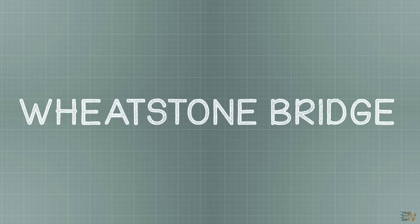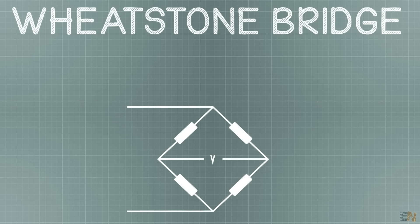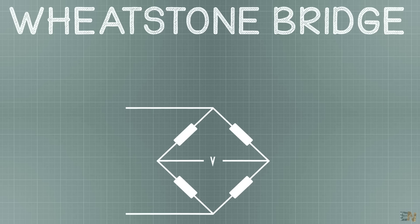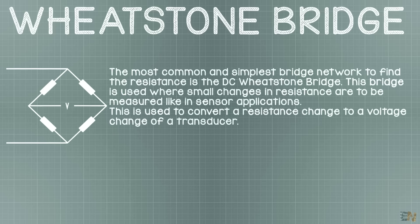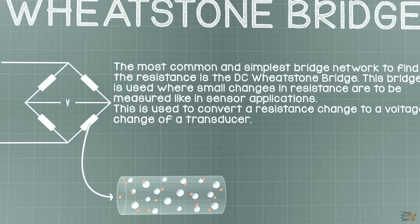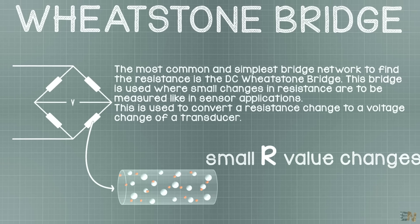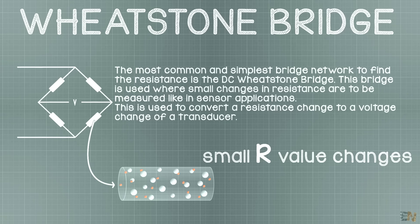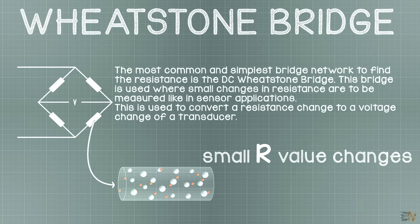What's up my friends, welcome back. Okay, so what is the Wheatstone bridge? Well, a good definition would be that it is the most common and simplest bridge network used to find resistance values. We use this configuration to detect very small resistance changes and that could be used with sensor applications. We convert resistance changes to voltage changes and that is very useful.